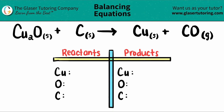Let's start with the left hand side. For copper, Cu, I have two of these, so I'm going to say that I have two copper. Oxygen — I don't see a subscript next to it, so that means that there's one oxygen. And the same thing goes for the carbon. I don't see any numbers, so that just means that I have one carbon.